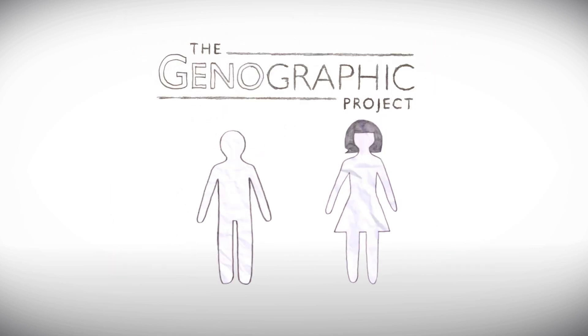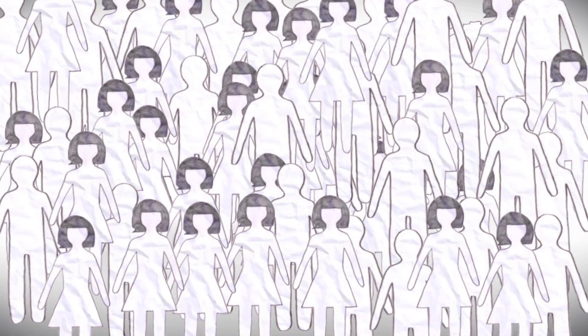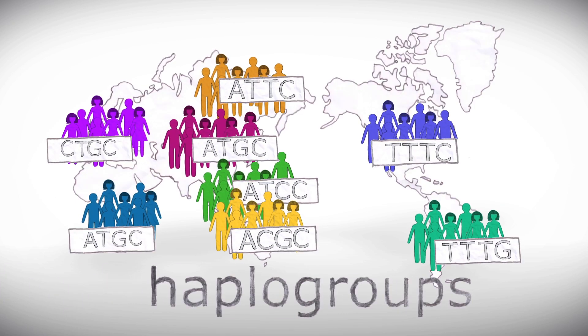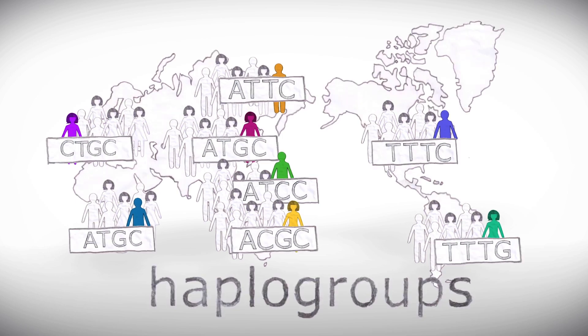Over the last several years, the Genographic Project has studied the Y chromosomes and mitochondrial DNA of more than half a million people. We now know that everyone on Earth belongs to one of hundreds of distinct groups of related people, based on which markers they have on their Y chromosome or mitochondrial DNA. We call these groups haplogroups. Each person in these groups traces their descent from a common ancestor. Haplogroups: your branch on the human family tree.